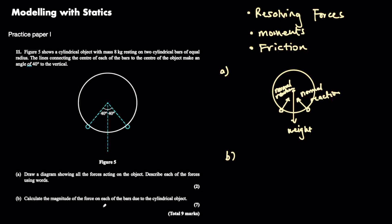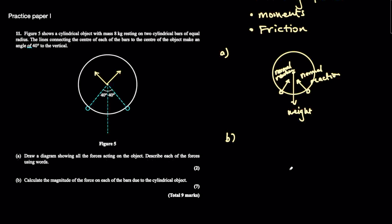Part B says calculate the magnitude of the force on each of the bars due to the cylindrical object. For this question we can actually model this as a static particle because the weight force pulls from the center and, since this is a solid cylinder, the normal reaction force can be modeled as acting on the center of the cylinder. We don't need to consider if the cylinder is bending or anything — the force where the rods touch the cylinder can be assumed to be the same as at the center. So we can draw a diagram with the center of the cylinder as a particle, with normal reaction forces at angles and the weight force pulling down.